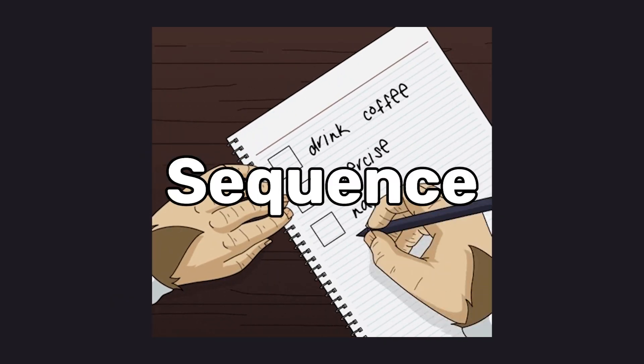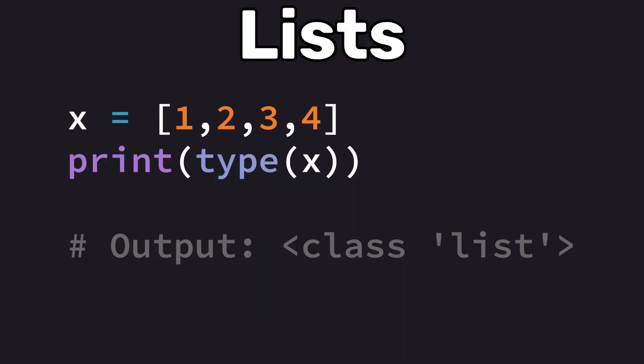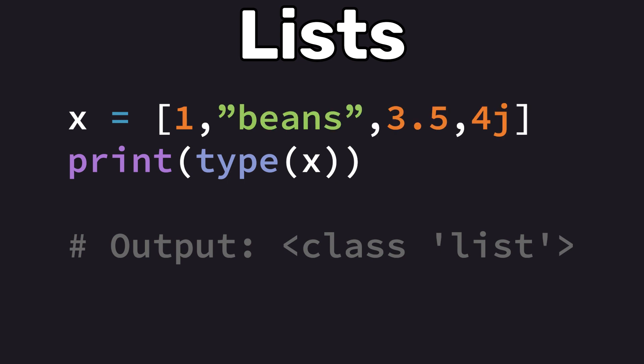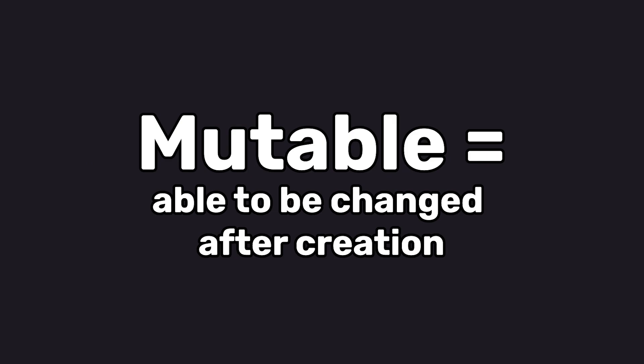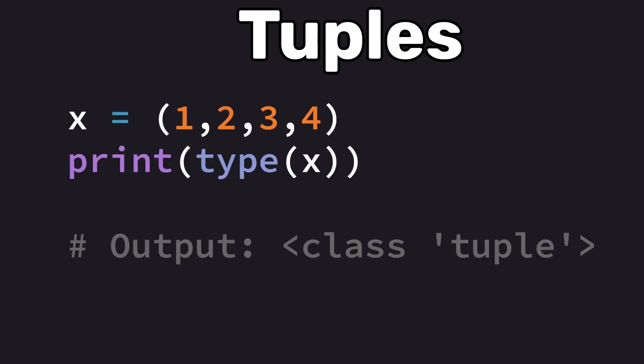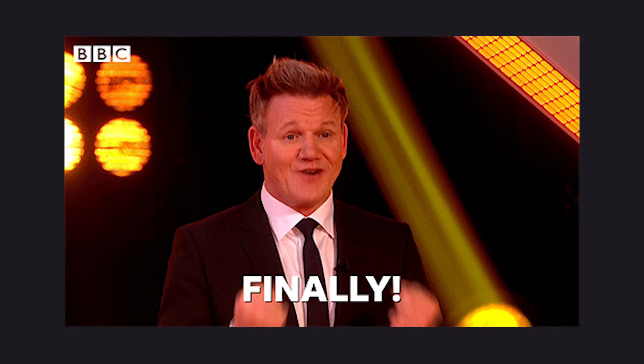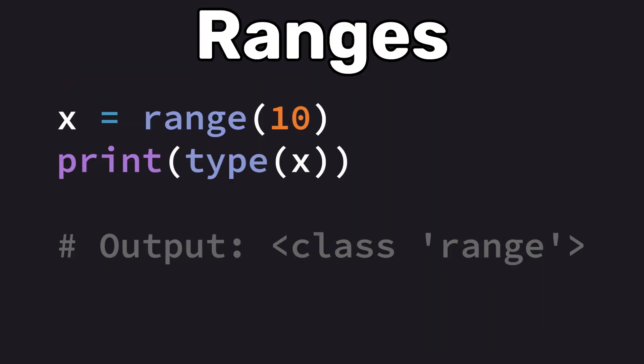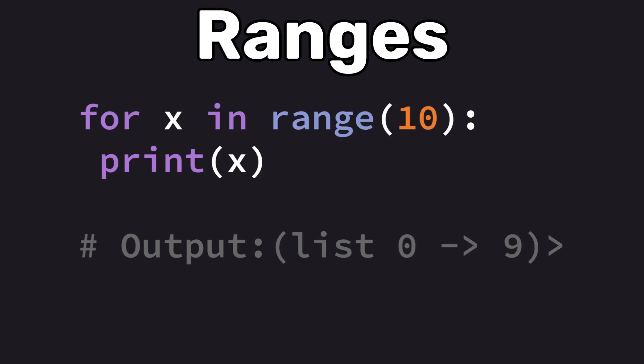Lists are sequence data types and are ordered, mutable collections of items which in Python can be different data types. Note: if something is mutable, it means it can be changed after creation. Tuples are similar to lists but are immutable, meaning they cannot be changed once created. Finally, ranges represent a sequence of numbers and are often used in loops.